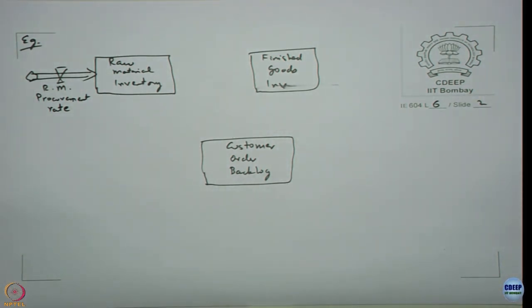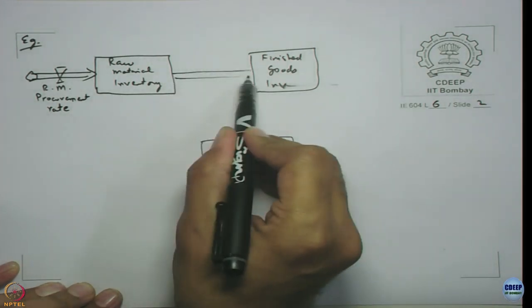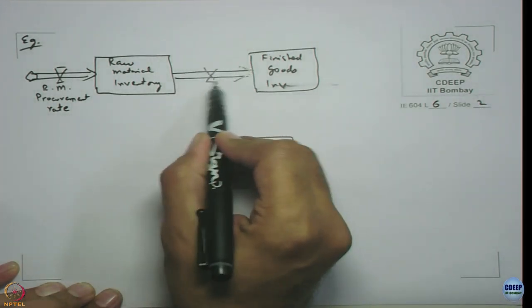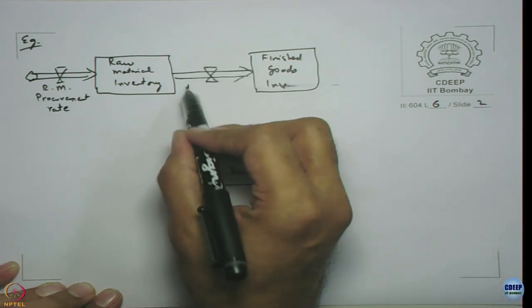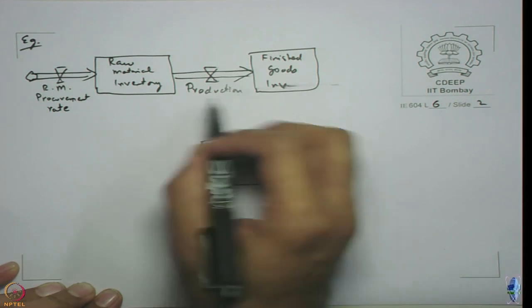And raw materials I am going to use the raw material to make the finished products right. Logically there must be some production process that is happening which converts these raw materials into finished products. Based on the raw material use I produce finished products. I can have a single arrow like this. This is called as production rate.